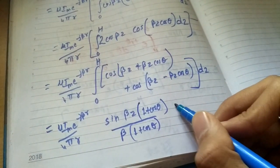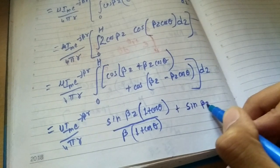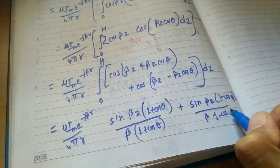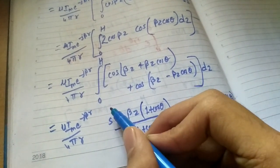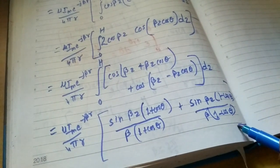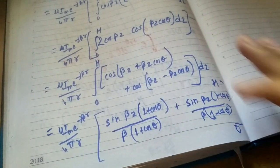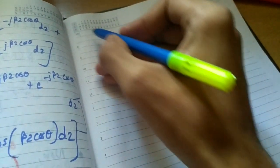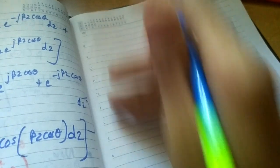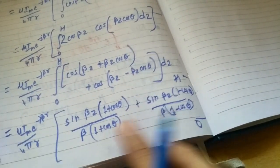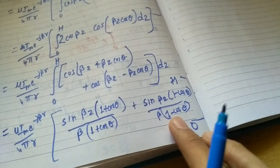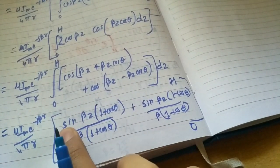By integrating we get this, under the limit zero to h. We know h is lambda by 4. First, we will take the LCM. Beta is now outside. Taking LCM, we get 1 minus cos squared theta, which is nothing but sine squared theta. Over here we will get 1 minus cos theta, and over there we will get 1 plus cos theta.